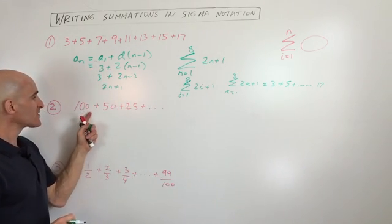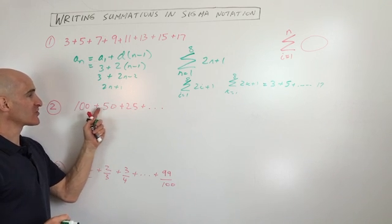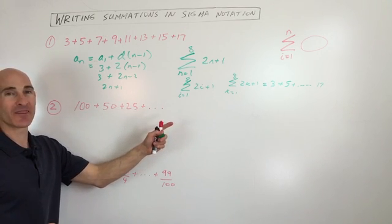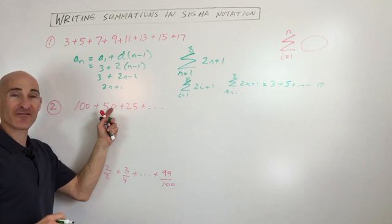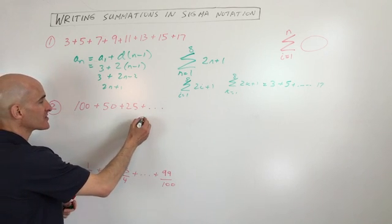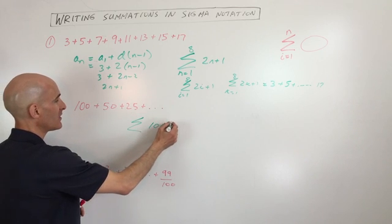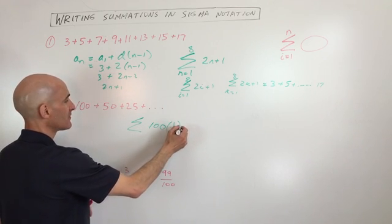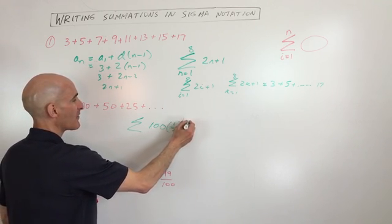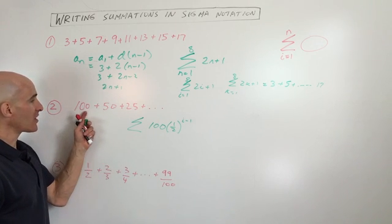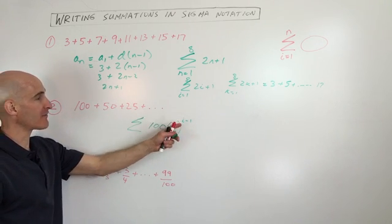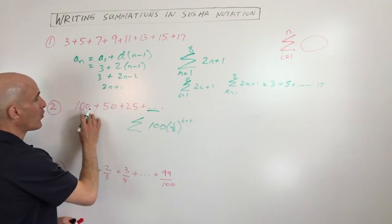So the next one, what's the pattern here? Like, how am I getting from this term to this term to this term and so on? So we're multiplying by a half, right? So what we're going to do is we're going to start off, we're going to say our formula is 100 times one half, we'll say i minus one times. So you start off with 100, you multiply by a half, by a half, by a half.